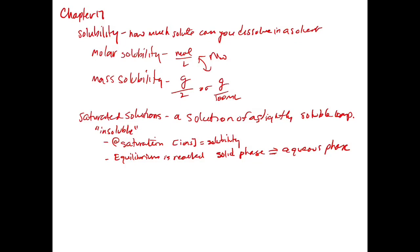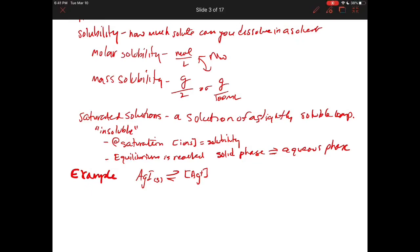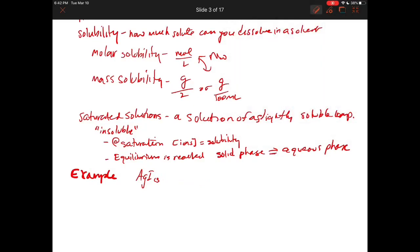And the solubility of these things tend to be very small. So we can define a new term. As an example, silver iodide. When you dissolve silver iodide, it's going to dissolve into its ions. Let me just write that correctly. When you dissolve silver iodide, it's going to dissolve into its ions: Ag+ aqueous plus I- aqueous. And when we're at solubility, we're going to have a little bit of the aqueous phase, and we're going to have the solid phase present.